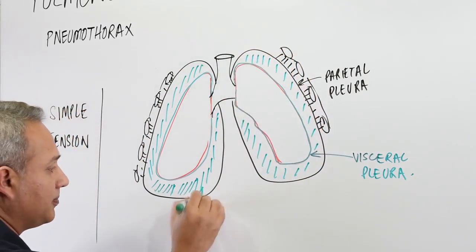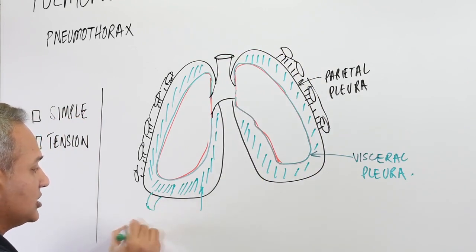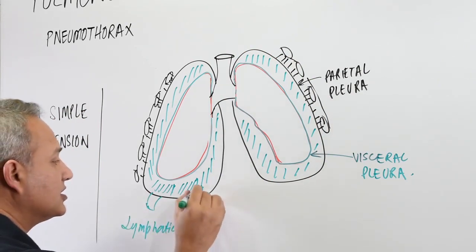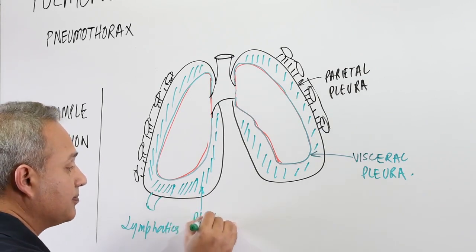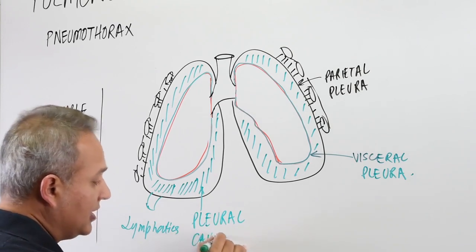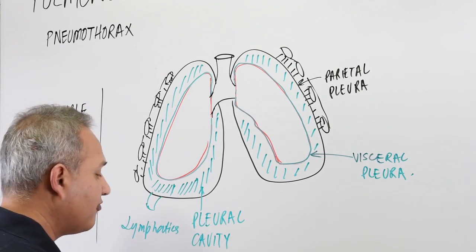So normally what happens is the pleural cavity has a small suction effect because of the lymphatics. I always make that as a small faucet-like structure. So this is the parietal pleural cavity. Pleural cavity has normally a pressure of minus 5 centimeters of water. Right, so that is a normal situation.